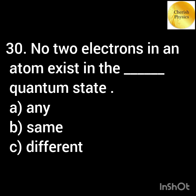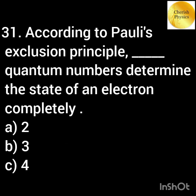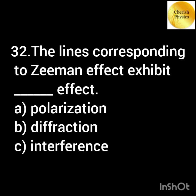According to Pauli's exclusion principle, no two electrons in an atom can exist in the same dash quantum state. According to Pauli's exclusion principle, how many quantum numbers determine the state of an electron completely? The lines corresponding to Zeeman effect exhibit dash effect.